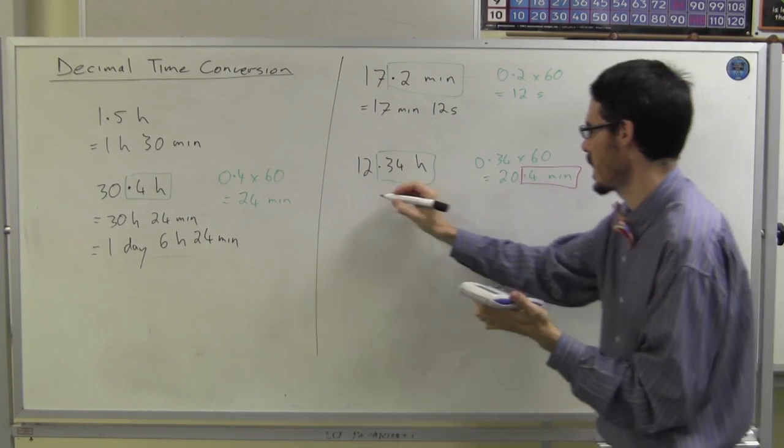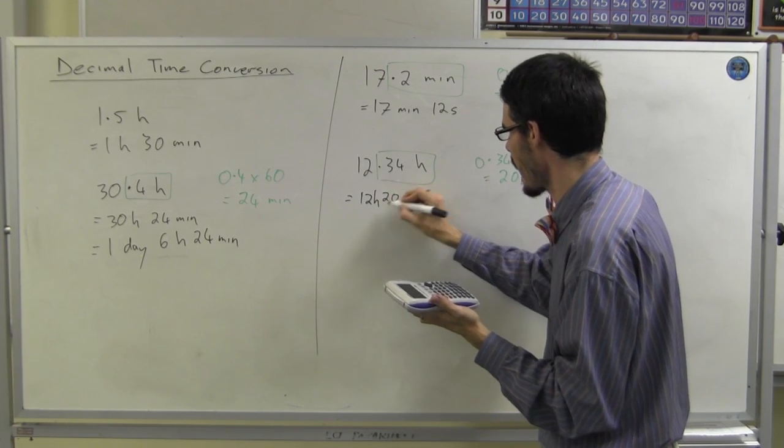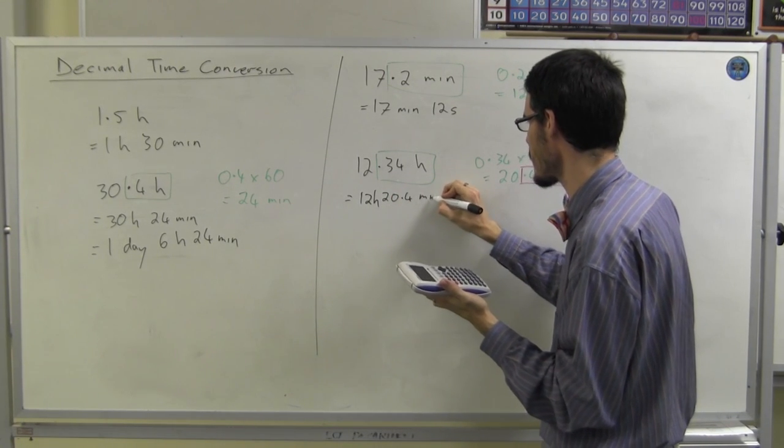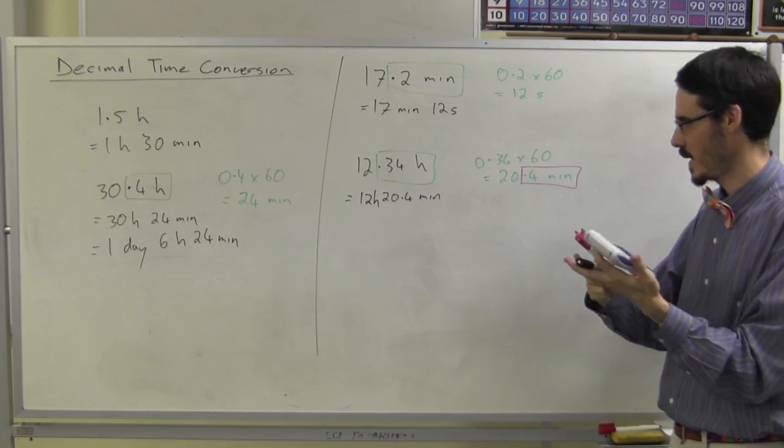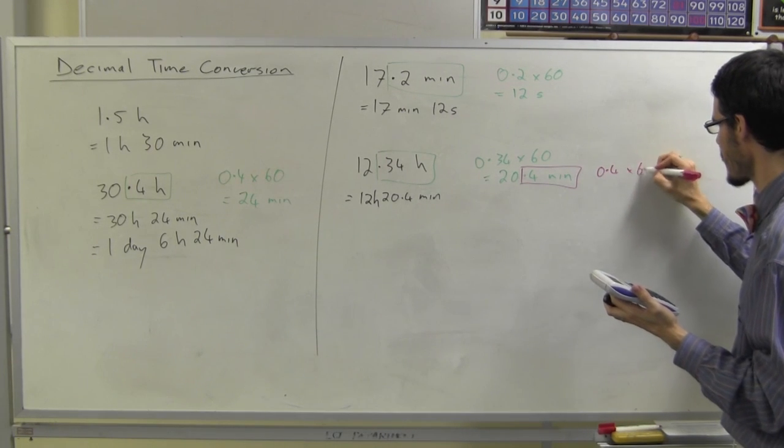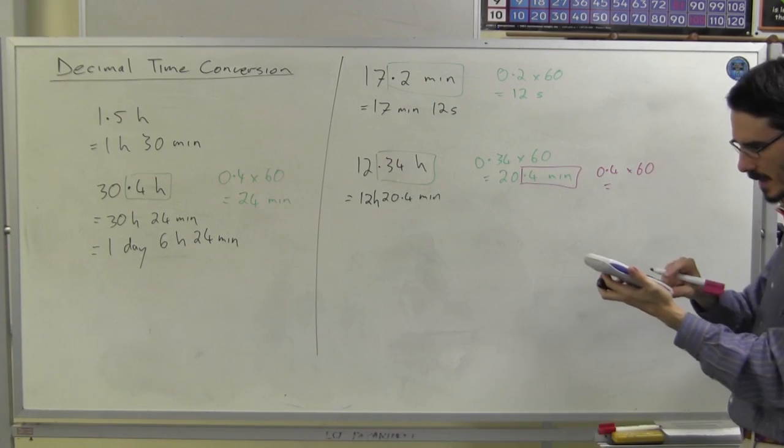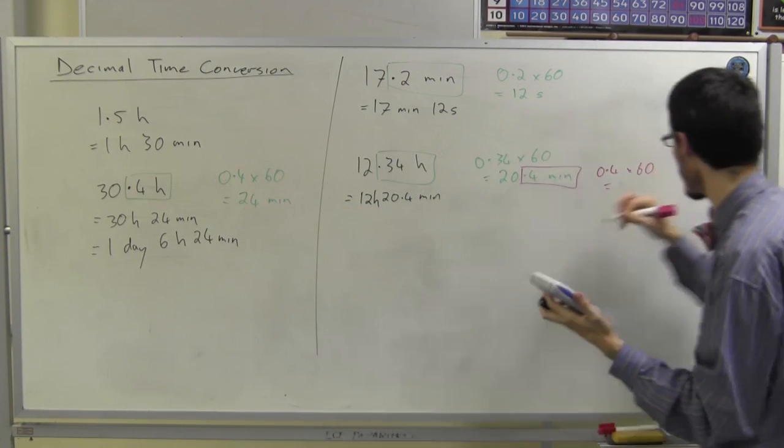So, while I can write this as 12 hours, 20.4 minutes. It would be much more satisfying to turn that into seconds. So, 0.4 times 60 will give me the number of seconds. We actually did this just before, didn't we? 24.